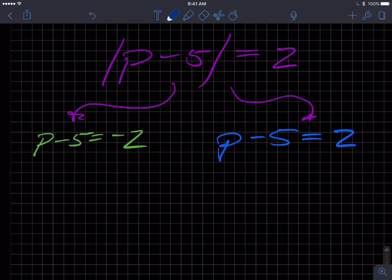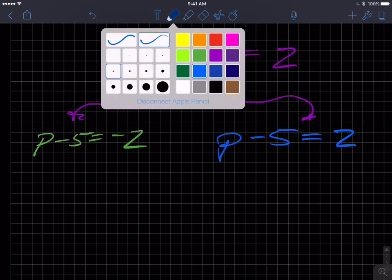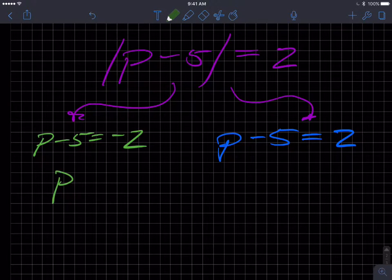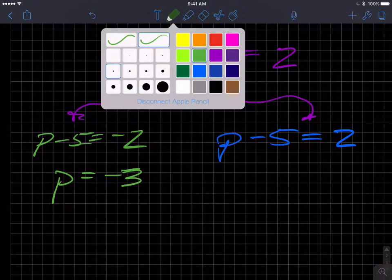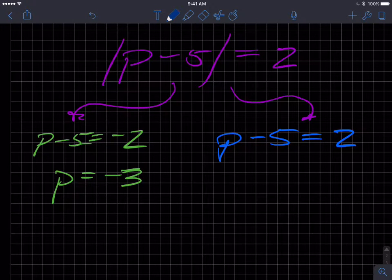Let's again look at p minus 5 is equal to negative 2, and p minus 5 is equal to 2. So I'm going to add 5 to both sides. If I add 5 to both sides, I'm going to get p equals negative 3. And over here, we're going to add 5 to both sides of this equation, I'm going to get p is equal to 7.